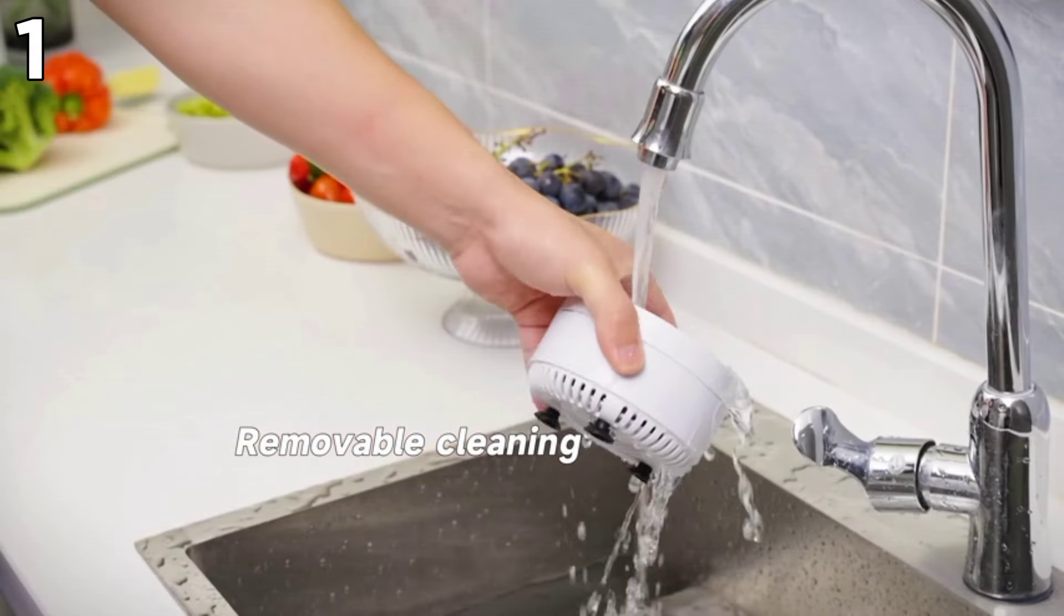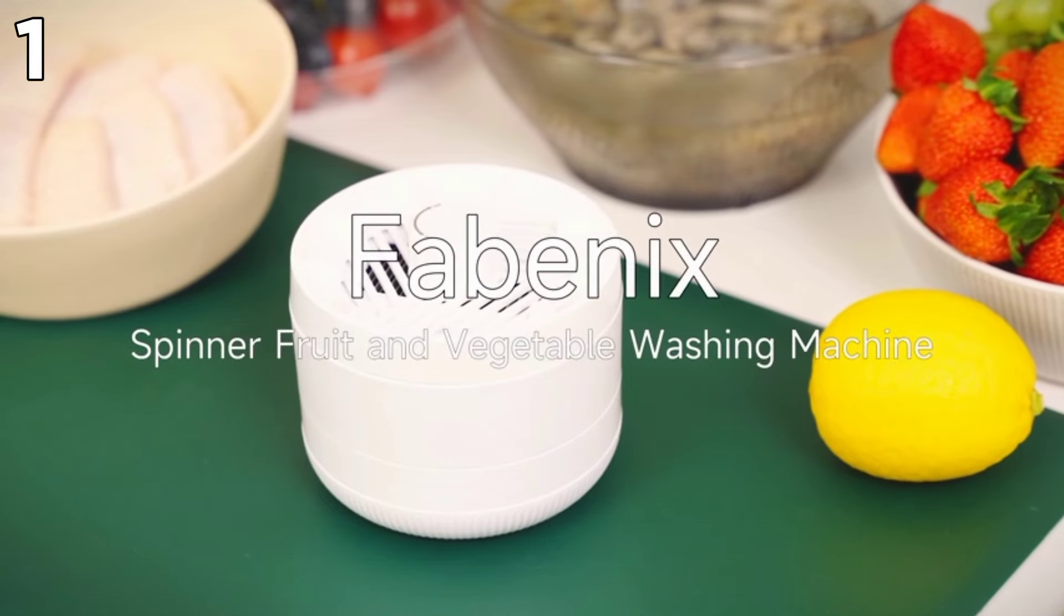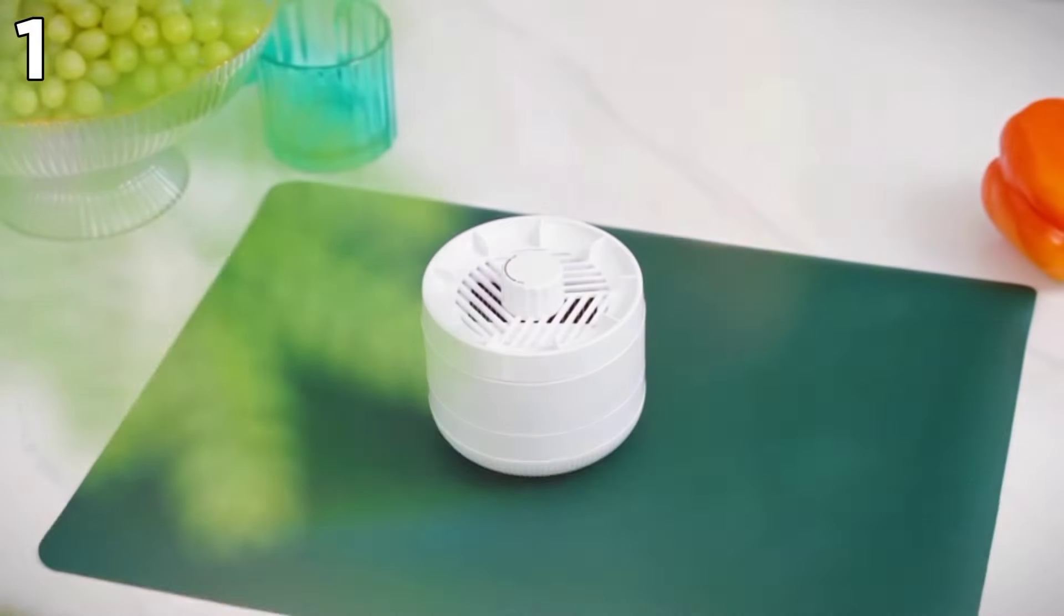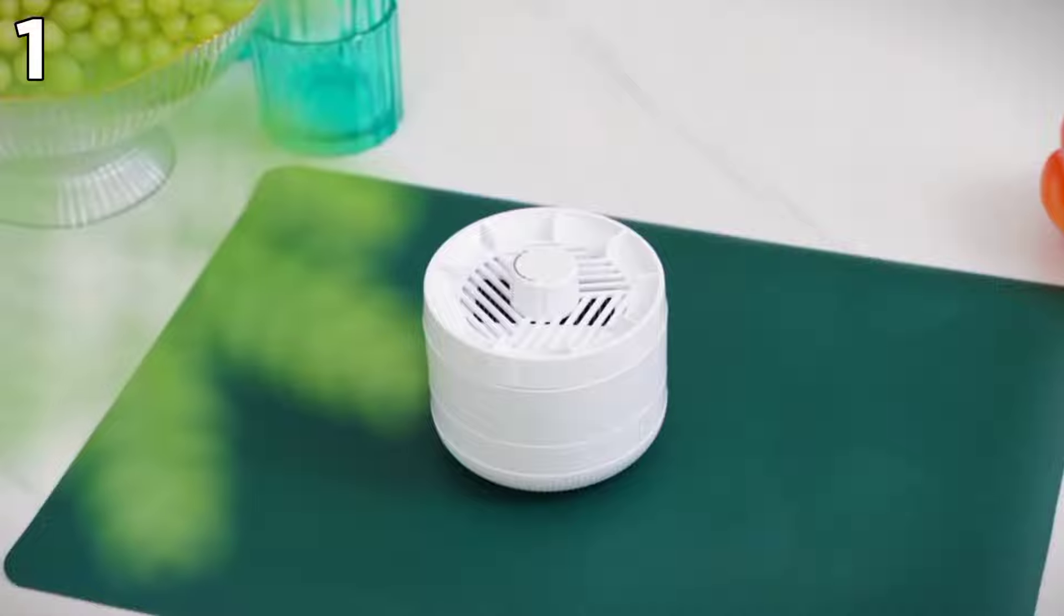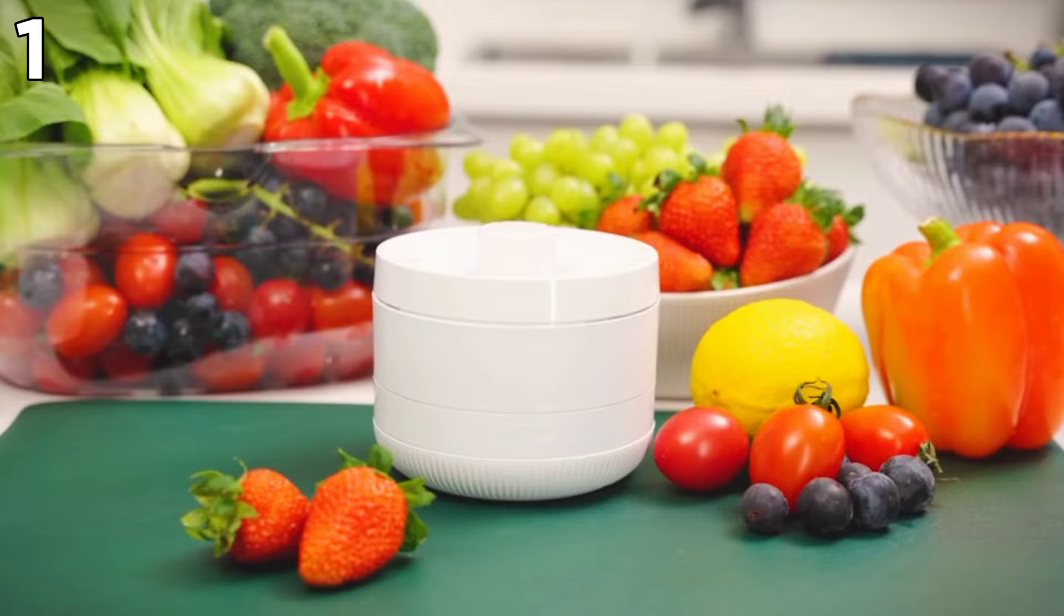However, it's more appropriate for small and moderate-sized batches and is slightly costlier initially. To sum up, the Fabenix Fruit and Vegetable Washing Machine is a revolutionary invention for those who take their health important and value hygiene in the kitchen.